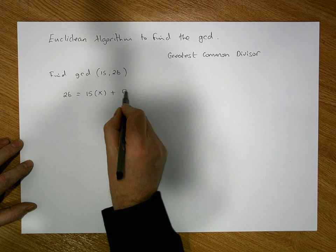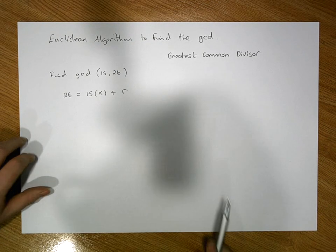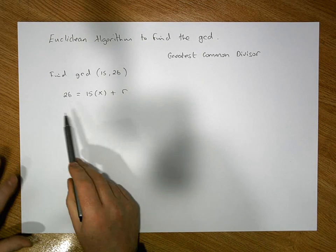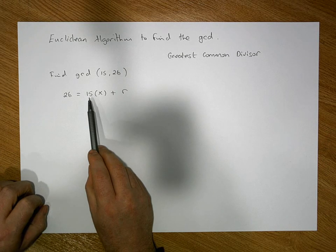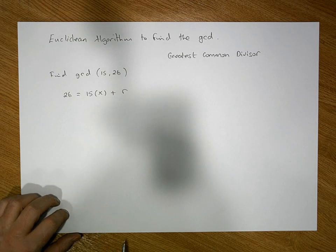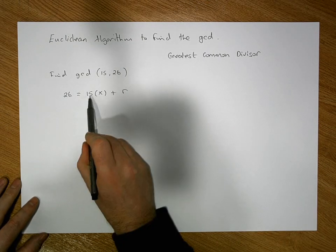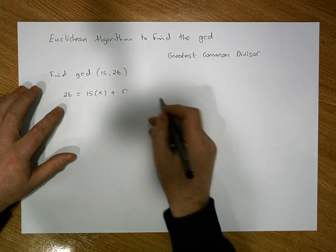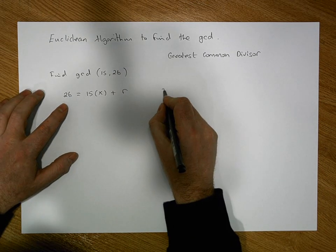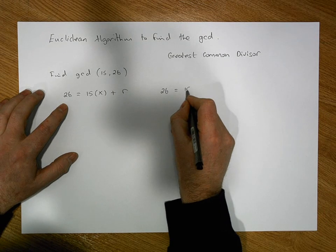This is what's known as the division algorithm. The question we're really asking is how many times does 15 divide into 26. In this example, we know 15 goes into 26 only once. So what we have is 26 is equal to 15 times 1 plus some remainder.